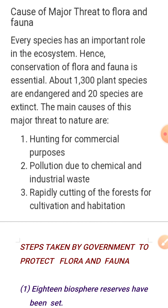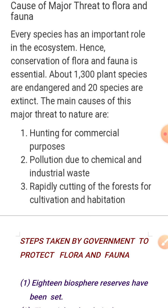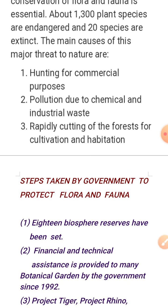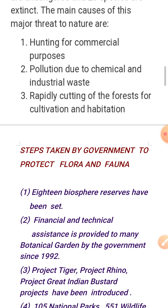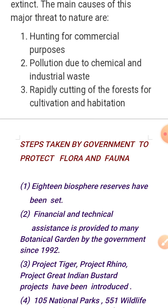Around 1,300 species are endangered, meaning they are near extinction. The main causes behind species becoming endangered or extinct include hunting for commercial purposes, also called poaching — hunting of trees and animals to fulfill commercial needs.